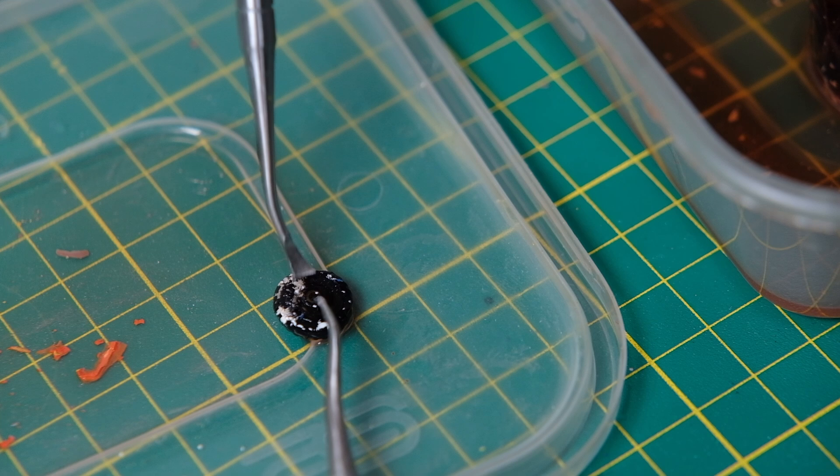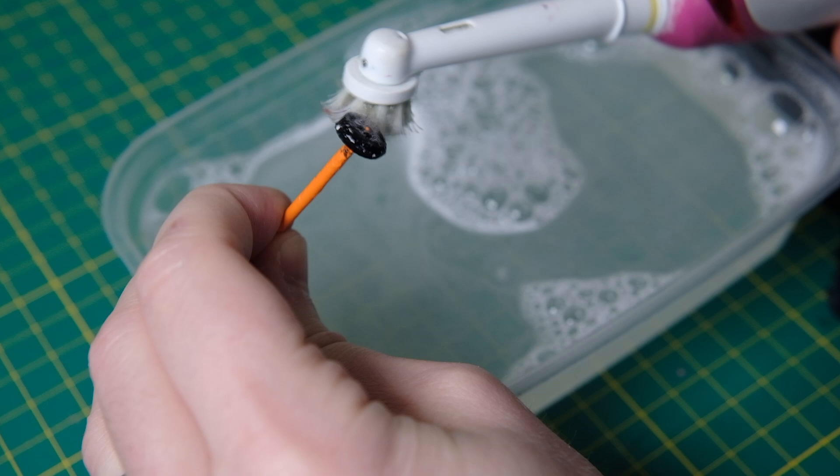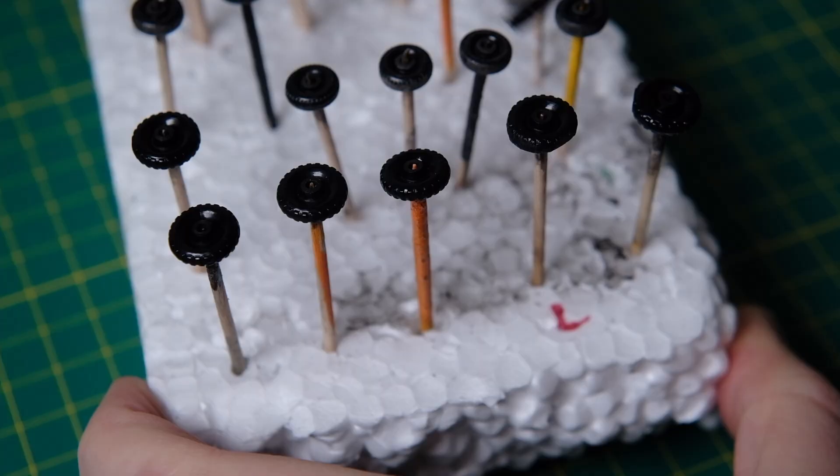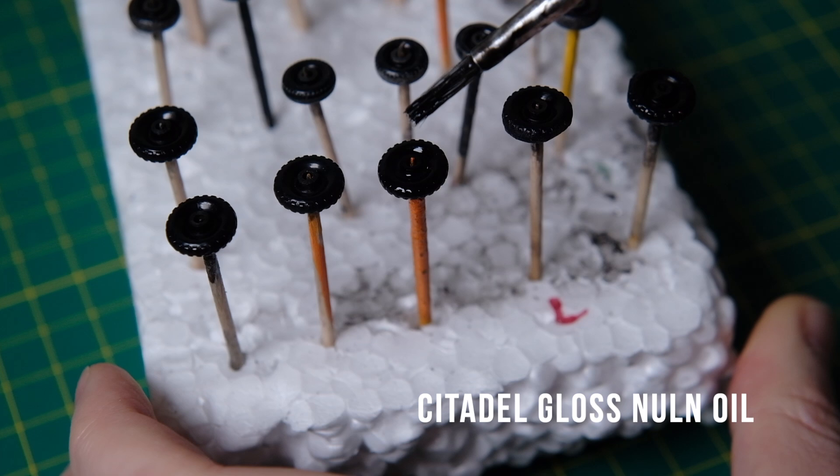The Dettol here has done its work and loosened up the paint from the plastic wheels. I wash off the last flakes before applying some Citadel Gloss Nuln Oil to freshen them up.